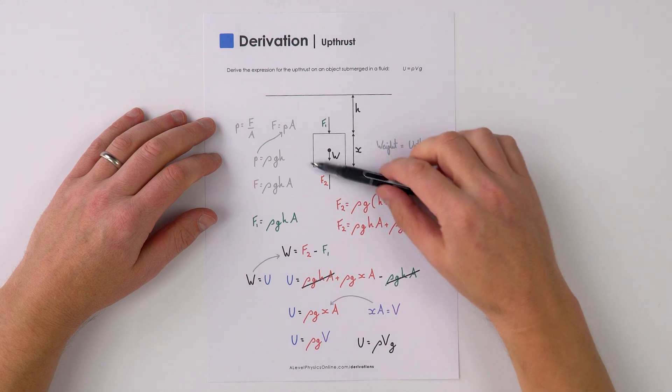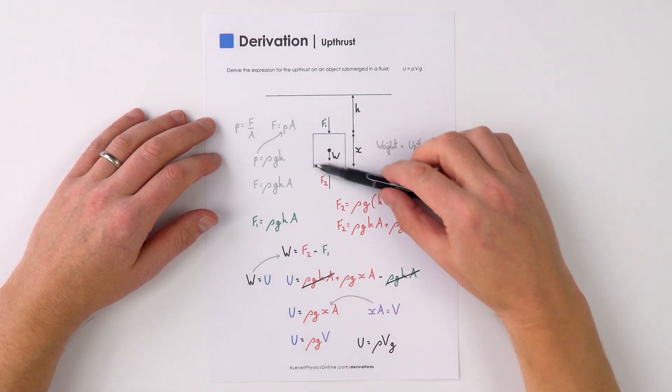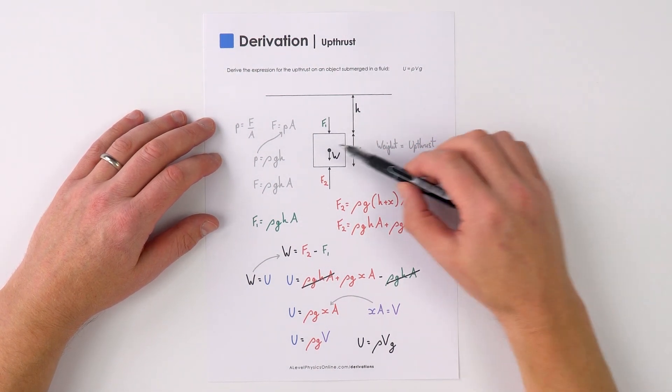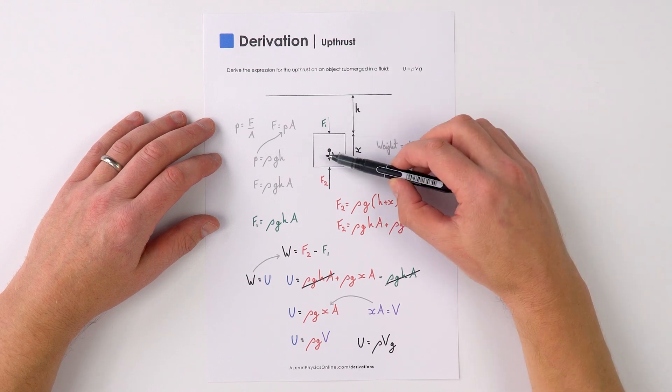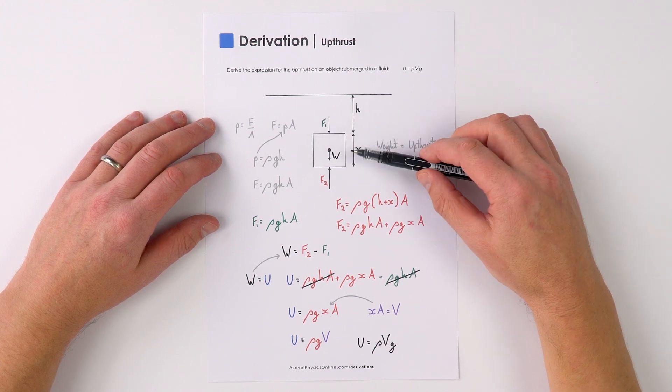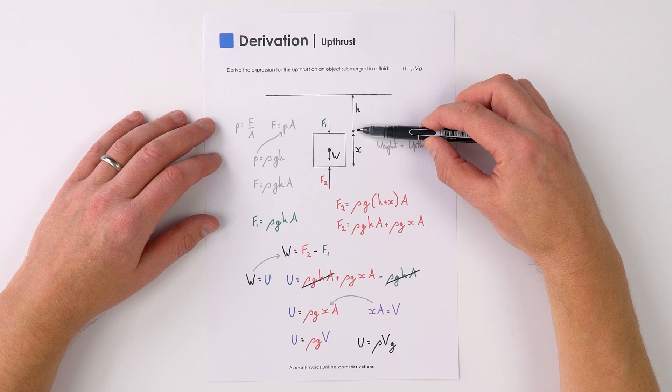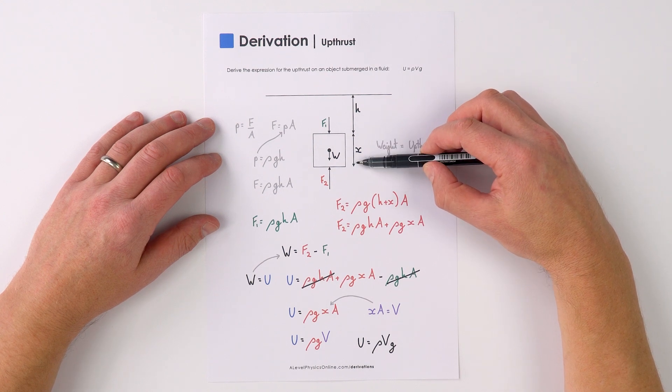This is how to derive an equation for the upthrust acting on an object which is fully submerged in a fluid. Here we have this particular shape. It's got a weight acting down, it's at a depth of h underneath the surface, and it's got a height equal to x.